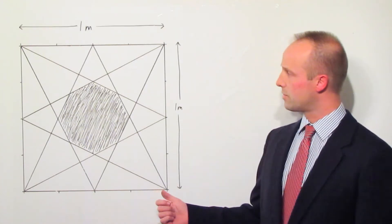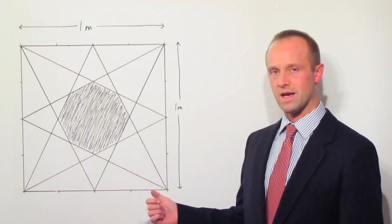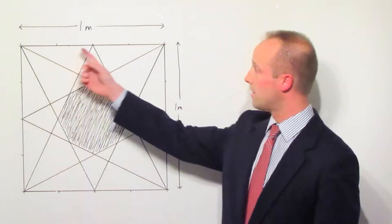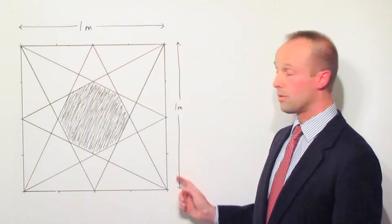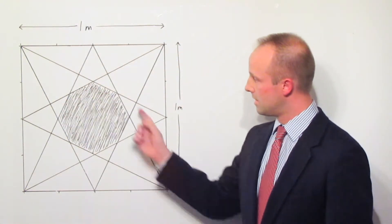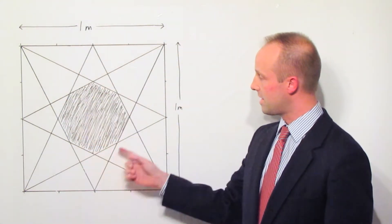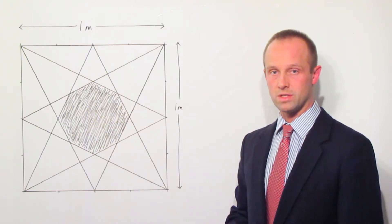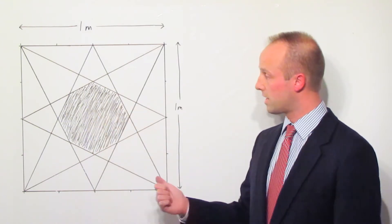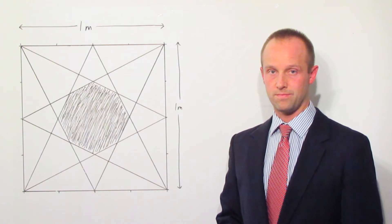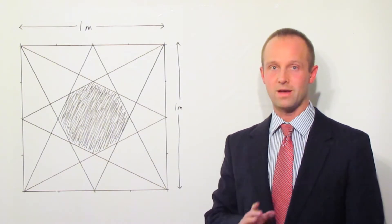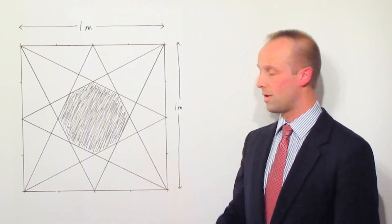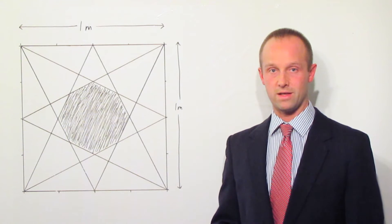This is a puzzle which I was sent earlier today. The idea is you've got a square that's one metre by one metre, and in the centre you've got an octagon. All you've got to do is work out the area of that octagon. I'd like you to pause the video and see if you can figure out what that area is.